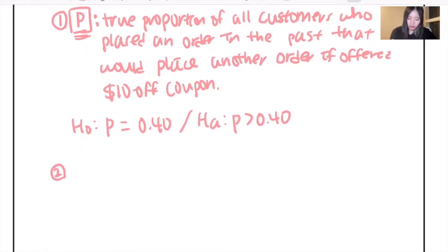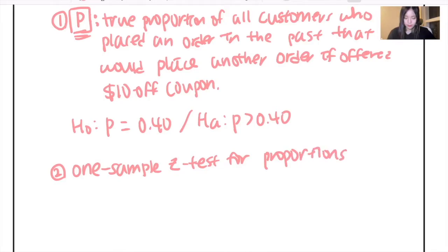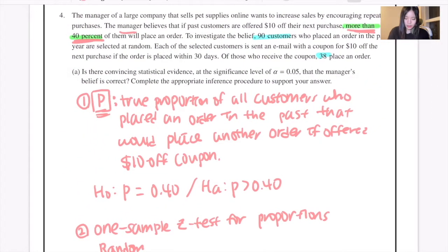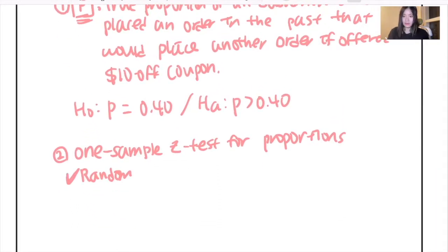Moving on to the second step. You need to define or identify the test you're going to use and check the conditions for it. And I think that the most appropriate test for this question would be a one-sample z-test for comparing proportions. And there are several conditions we need to check, for example, if it is a random sample. And because it is actually mentioned in the question that these customers were selected at random, this condition is satisfied.